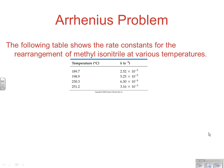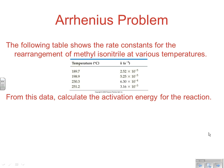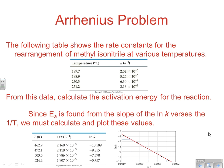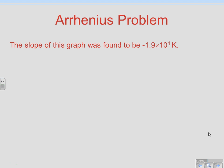Here's a typical Arrhenius problem: a table shows rate constants for the rearrangement of methyl isonitrile at various temperatures. Temperature and K data means we're using the Arrhenius equation. We want to calculate the activation energy for the reaction. Since Ea is found from the slope of the graph of ln K versus inverse Kelvin temperature, we set up that plot — ln K on the Y-axis and 1/T (inverse Kelvin temperature) on the X-axis. Once the line is generated using a graphing calculator or Excel, we can get the slope and Y-intercept.